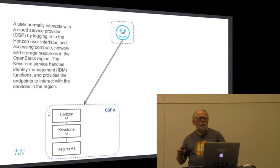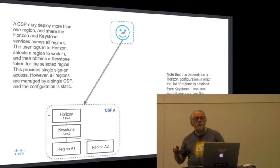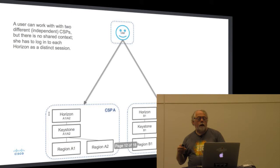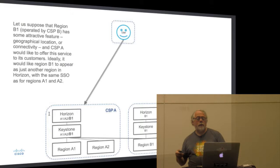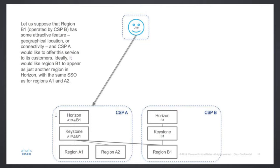I'll run through a couple of pictures on how that looks. This is the picture we're normally used to, with a user interacting with a cloud service provider that may have multiple regions within their control — CSP is the scope of control, all of those systems configured by a single entity. But a user may want to interact with a second cloud service provider, and a cloud service provider may want to use resources from another provider. This is a typical kind of peering arrangement, very common in the telco world. So cloud service provider A would like to be able to expose region B1 as well as its own regions A1 and A2.